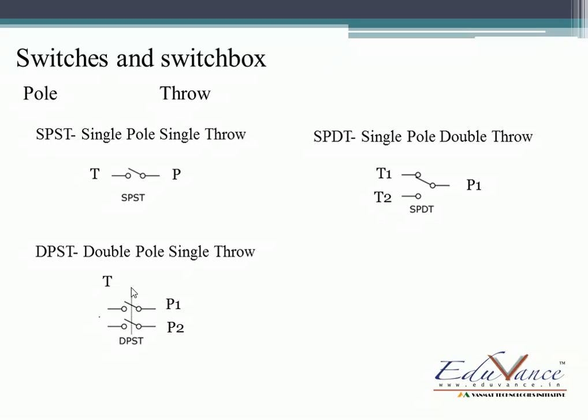This is what makes it two poles and a single throw. This is actually one switch controlling two equipments at the same time. Suppose two lights are connected together. When you turn on one switch, two lights turn on at the same time.